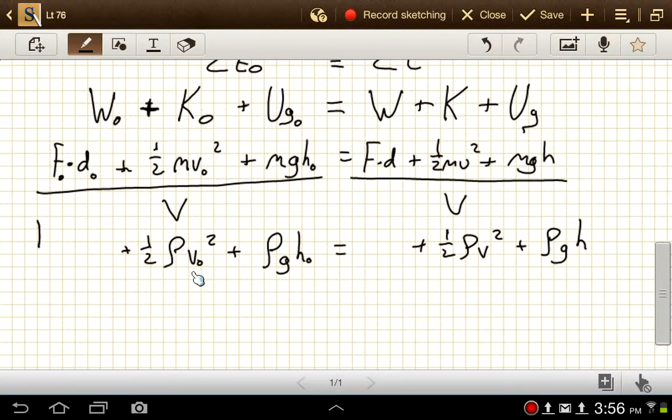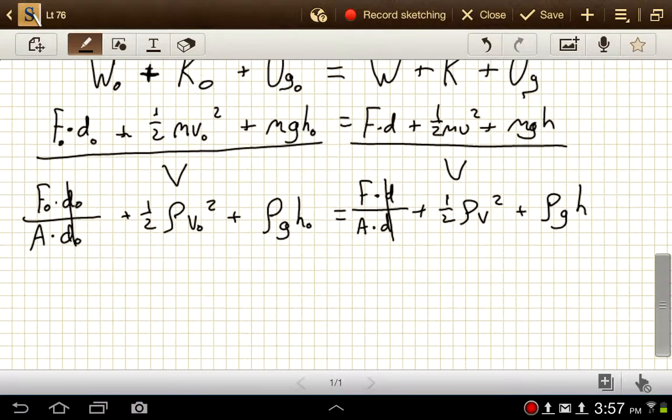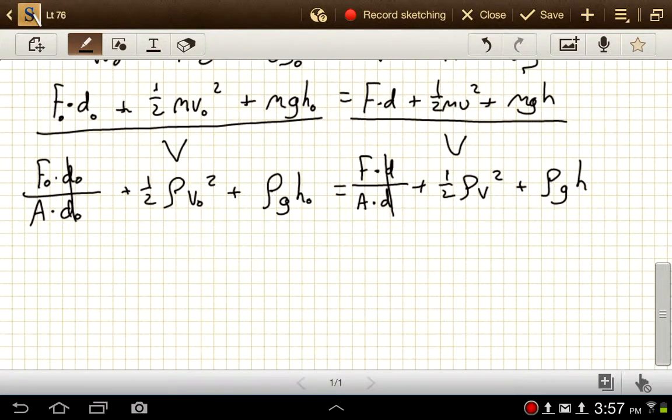So I can write this out as F nought times D nought divided by the volume, but I'm going to write that as A times D. Okay, and then over here, times D over A times D. And we'll see that those D nought cancels out, and that D cancels out. And now we've got force divided by area. A force divided by area, that's just pressure. So the pressure initial plus one-half density times initial velocity squared plus density times gravity times initial height.